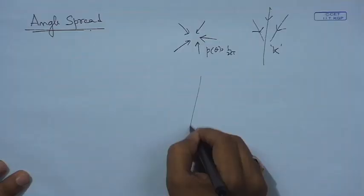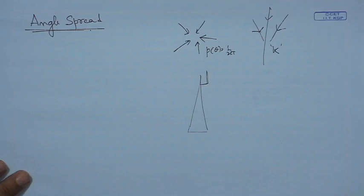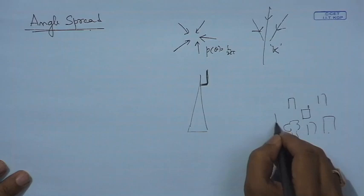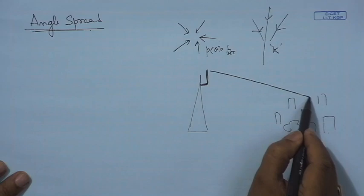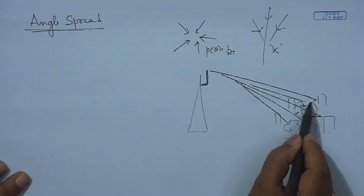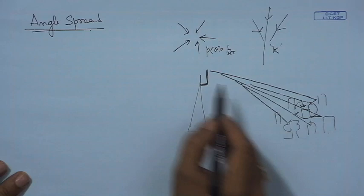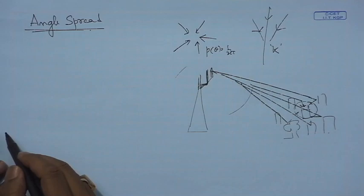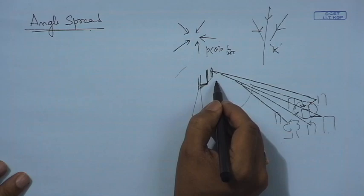Typically, the base station is at a height while the mobile is surrounded by buildings and many scatterers. At the mobile location, signals arrive from all directions with roughly equal probability. However, at the base station, with multiple antennas, it is not true that rays come from all directions equally. Therefore, the angular spread at the mobile is not the same as at the base station — this is a very fundamental and important point in deriving MIMO results.